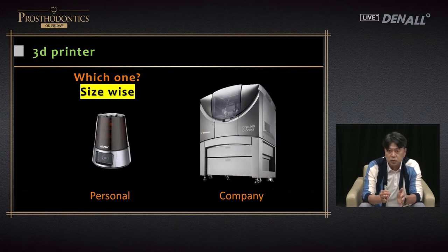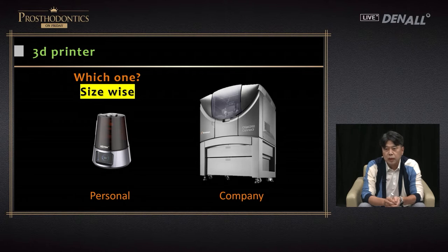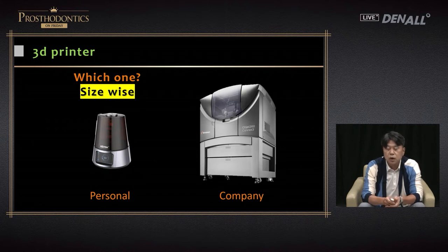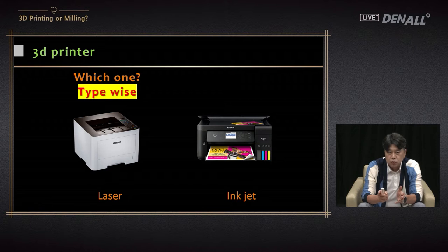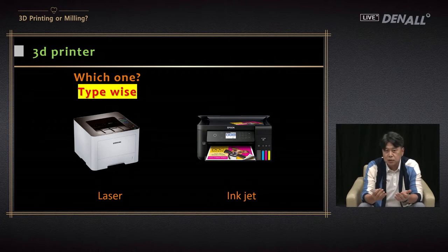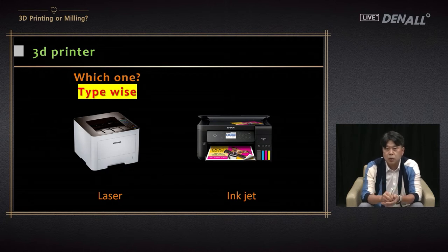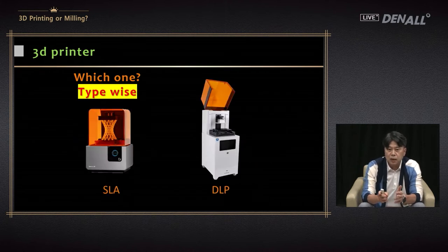In dental clinics, we can use the personal printer; businesses can use the big printers. A center uses the big one to fabricate surgical guides. The second categorization is based on types. 2D printers have laser versus inkjet — they do similar work but print differently. Laser and toner are used by the laser printer; inkjet nozzle and ink are used by the inkjet printer. In 3D printers, we have SLA and DLP types.